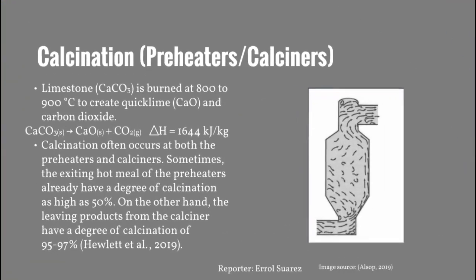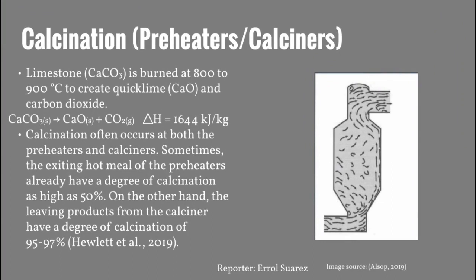The next unit process is calcination — the decomposition of calcium carbonate. This reaction is done at 800 to 900 degrees Celsius and is highly endothermic. Calcination occurs at both the preheaters and the calciner. Raw meal leaving the preheaters, also known as hot meal, may already have a degree of calcination as high as 50 percent. The calciner is like a vertical furnace where calcination is completed realistically to 95 to 97 percent.